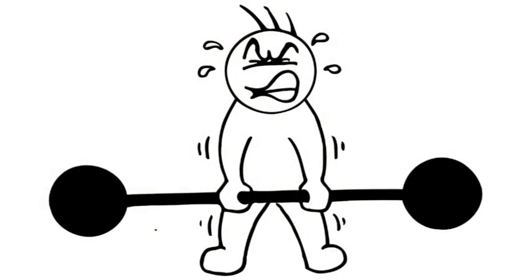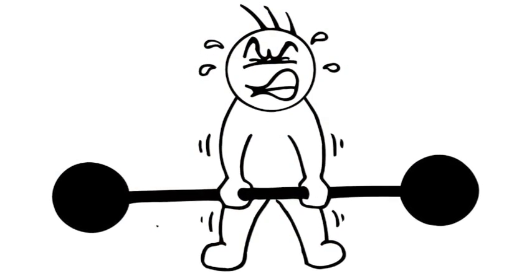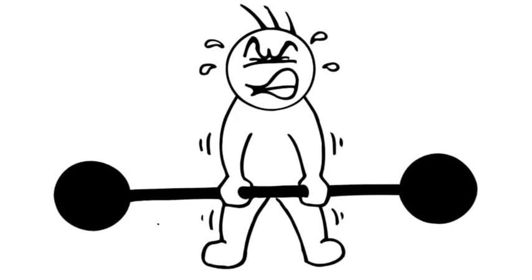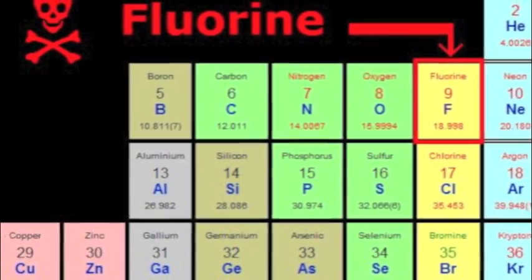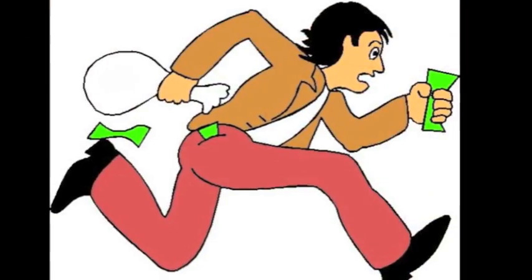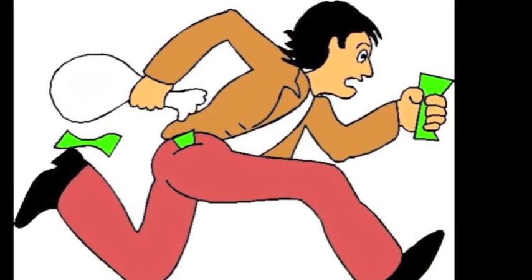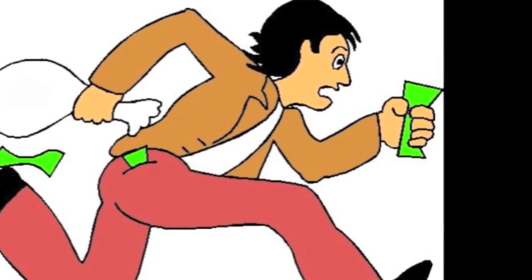Francium is very, very weak, giving up electrons as we speak. Fluorine is very, very mean, stealing electrons like a fiend.